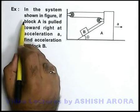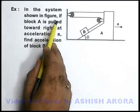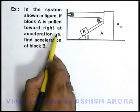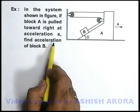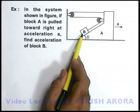Let us discuss an example. It says in the system shown in figure, if block A is pulled toward right at acceleration a, we are required to find the acceleration of block B.